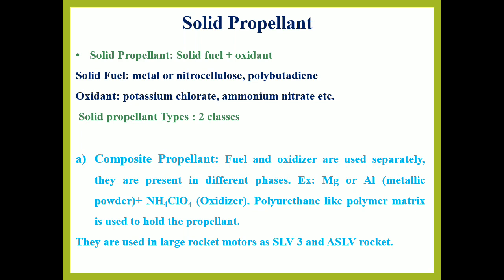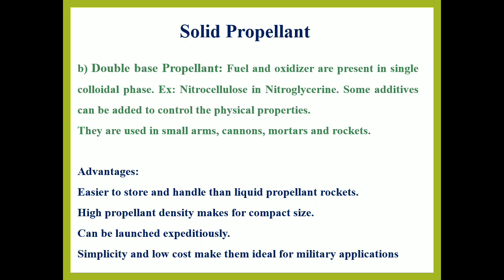Composite propellants are used in larger rocket motors. SLV-3 and ASLV rockets in India have used composite propellants. The second category is double base solid propellants, in which fuel and oxidizers are present in a single colloidal phase. For example, nitrocellulose dissolved in nitroglycerin makes a double base propellant in a single colloidal phase, so they are called homogeneous solid propellants. Some additives can be added to control their physical and chemical properties. They are generally used in small arms, motors, rockets, or cannons.